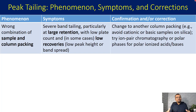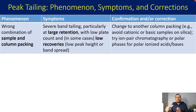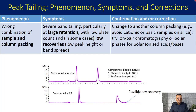The action you can take is to change the column. For example, avoid cationic or basic samples on silica columns. Try ion-pair chromatography or polar phases for polar ionized compounds like acids or bases. Let me give you one example.